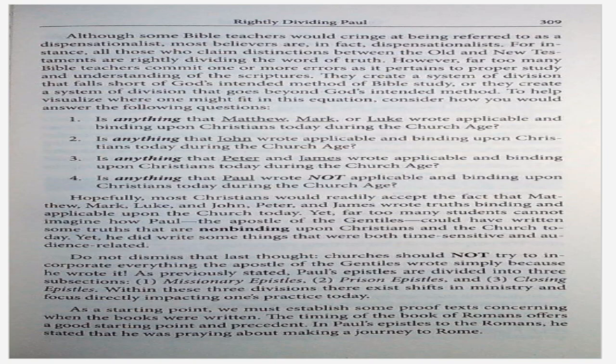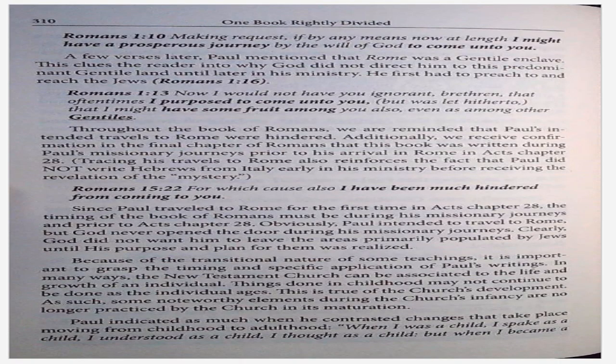As a starting point, we must establish some proof texts concerning when the books were written. The timing of the book of Romans offers a good starting point and precedent. In Paul's epistles to the Romans, he stated that he was praying about making a journey to Rome — Romans 1:10: making a request, if by any means, now at length I might have a prosperous journey by the will of God to come unto you. A few verses later, Paul mentions that Rome was a Gentile enclave. This clues the reader into why God did not direct him to this predominant Gentile land until later in his ministry. He first had to preach to and reach the Jews.